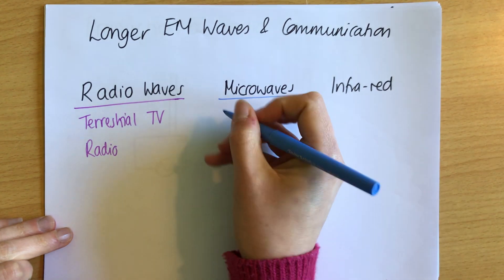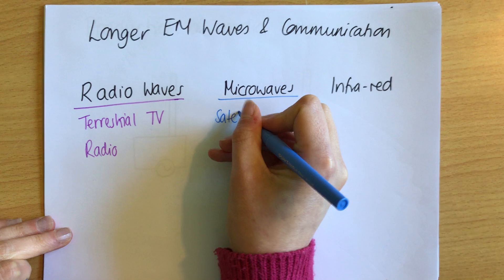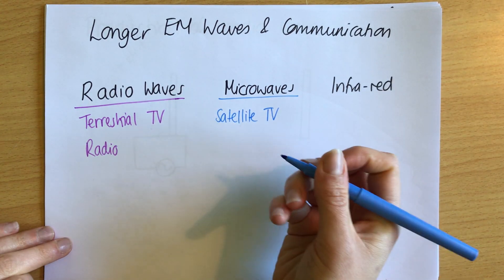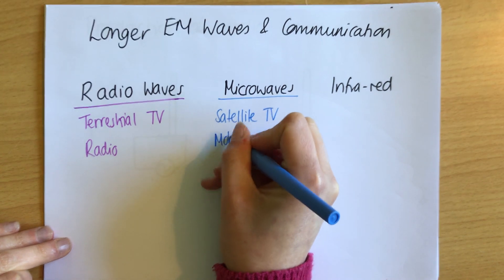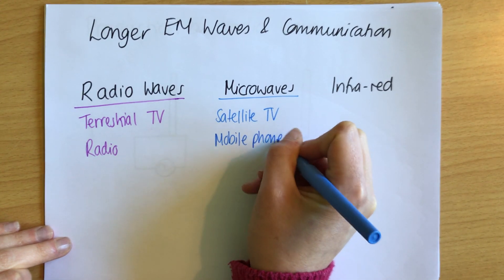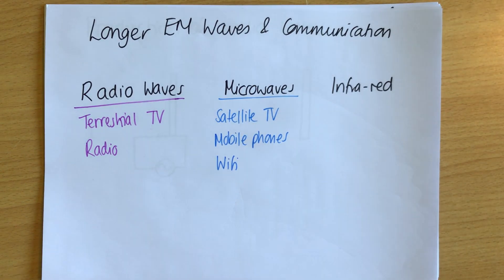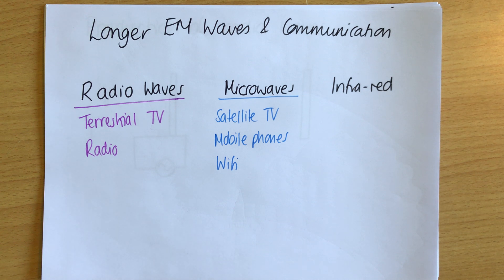Microwaves are used for satellite TV, so things such as Sky if you're in the UK. It's also used for mobile phones and Wi-Fi. You may have heard a lot of discussion about 5G and the potential dangers, which I personally don't think are significant. Your mobile phone signal, Wi-Fi, 5G, and 3G signals are all microwave signals.